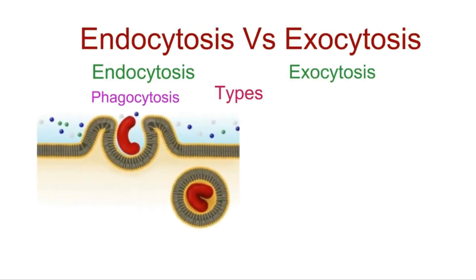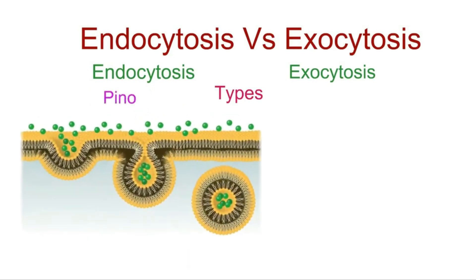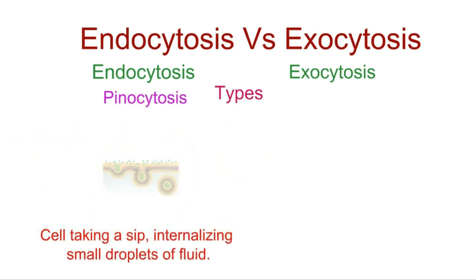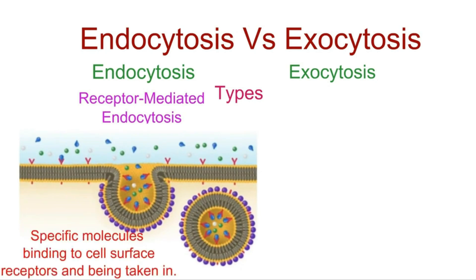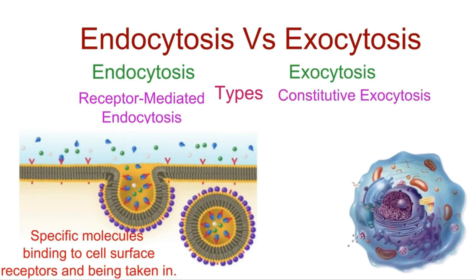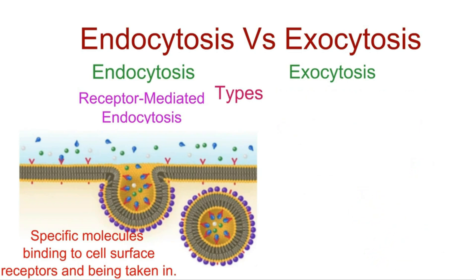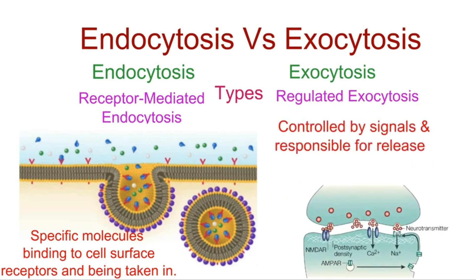Phagocytosis is the process of engulfing large particles or other cells, often for digestion. Pinocytosis is like the cell taking a sip, internalizing small droplets of fluid. Receptor-mediated endocytosis involves specific molecules binding to cell surface receptors and being taken in. Constitutive exocytosis involves the continuous release of substances like waste and membrane components, without needing specific signals. Regulated exocytosis is controlled by signals or stimuli and is responsible for the precise release of specific substances, like neurotransmitters.